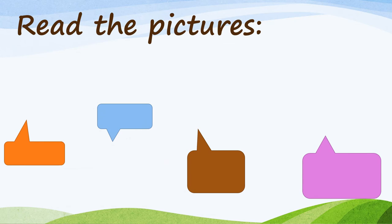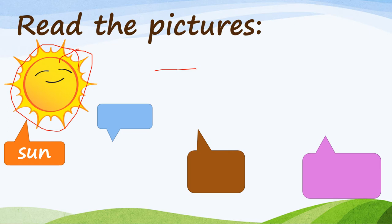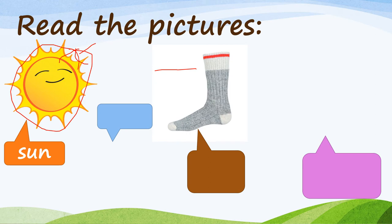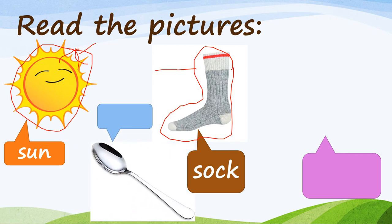Let's try to read some pictures that begin with letter S. First picture — what's this? It's a sun! S-S-sun. Okay, again. What's this next picture? Something you always wear — it's a sock! Very good, it's a sock.